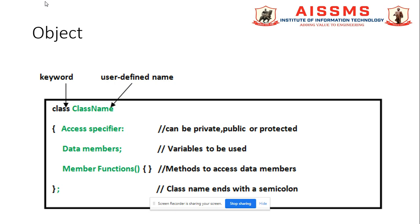Access specifiers can be private, public, or protected. Data members are the variables which are used to give the calculations, mathematical as well as arithmetic calculations, to store the values in that. Member functions are the methods to access data.